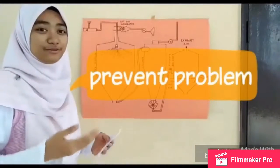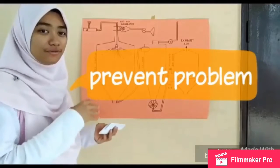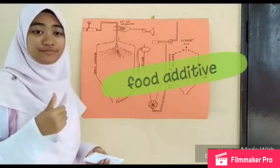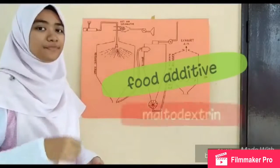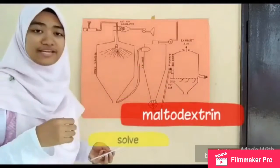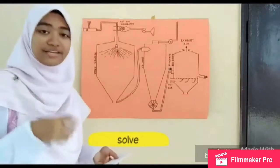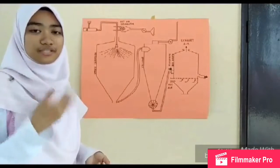The first step to prevent the problems is by using maltodextrin as a food additive. Maltodextrin can solve clumping problems and also increase the yield of sour soup powder.